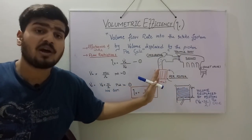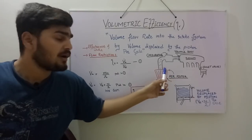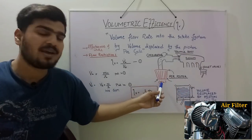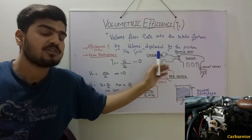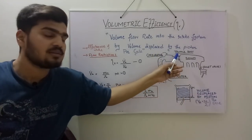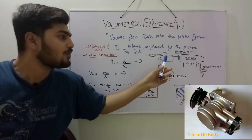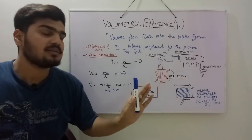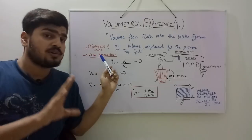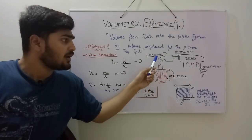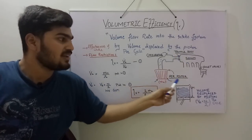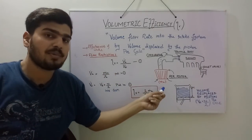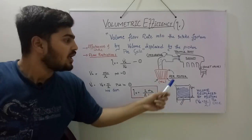Here I have shown the typical intake air system of a spark ignition carburetor engine. The main parts of this intake system are the air filter, which will filter the incoming air with a mass flow rate of m-dot-a, then there is a carburetor which will produce the air-fuel mixture, and then there is a throttle body which will control the amount of air-fuel mixture into the cylinders. All these parts of the intake system will produce some kind of flow restriction to the incoming air.